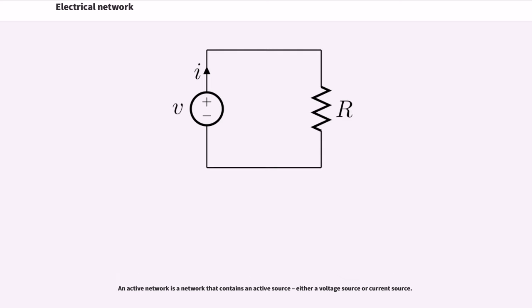An active network is a network that contains an active source, either a voltage source or current source. A passive network is a network that does not contain an active source. An active network contains one or more sources of electromotive force. It consists of active elements like a battery or a transistor. Active elements can inject power to the circuit, provide power gain, and control the current flow within the circuit.